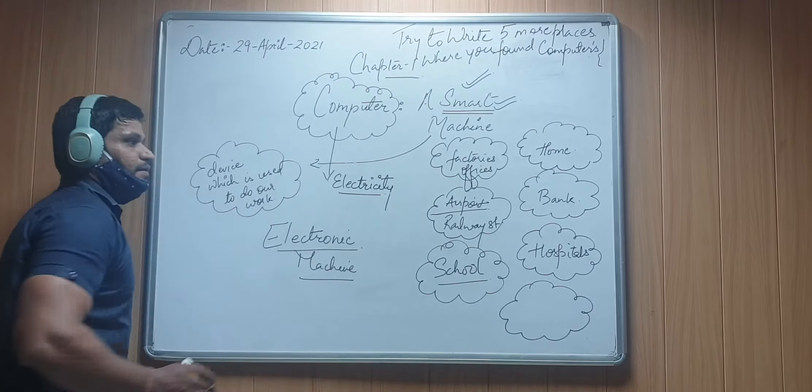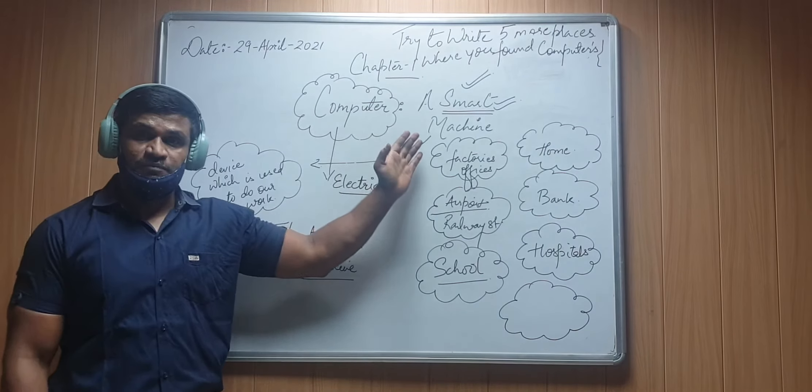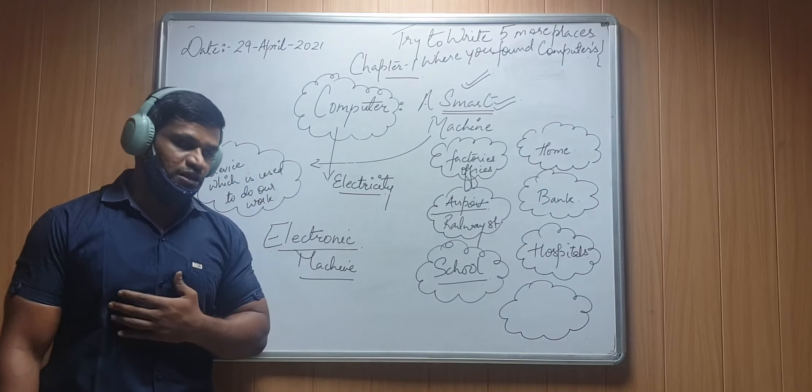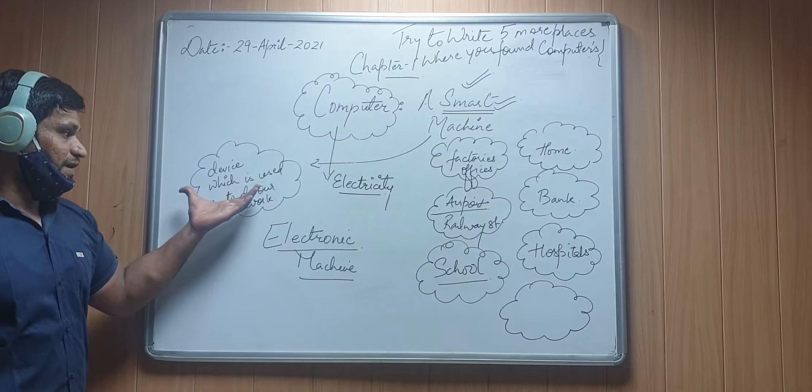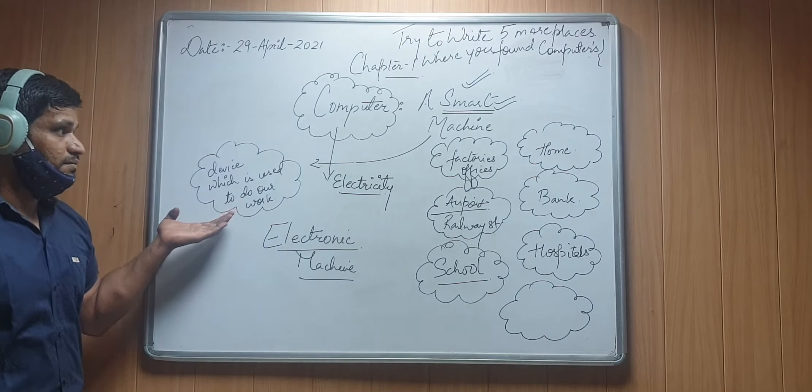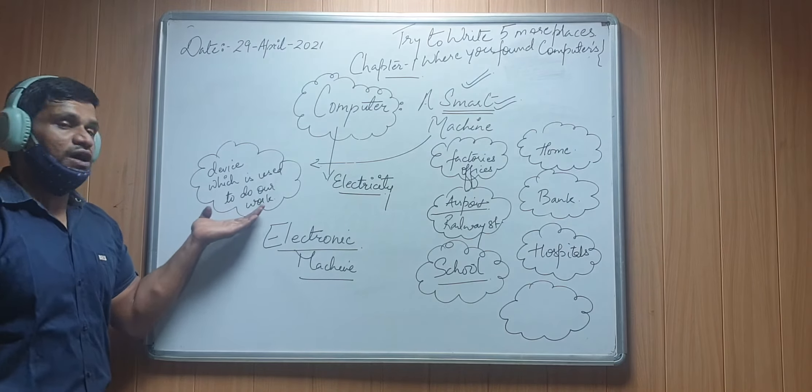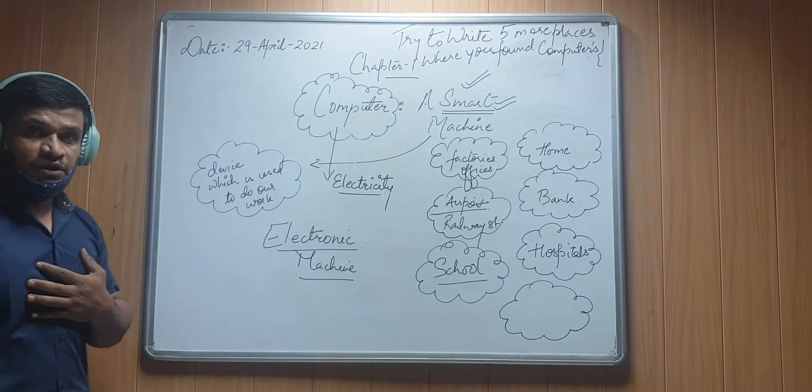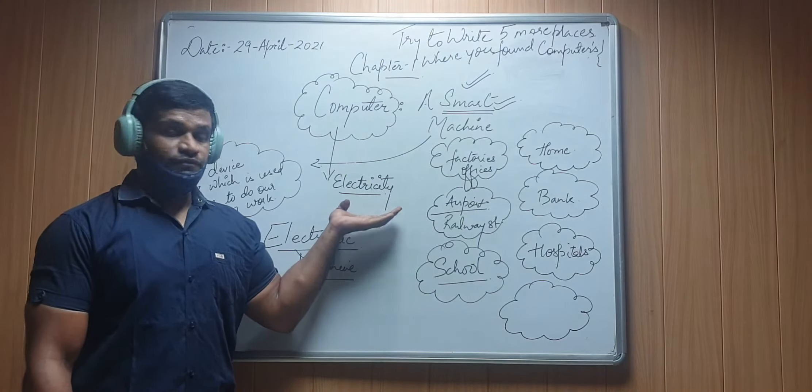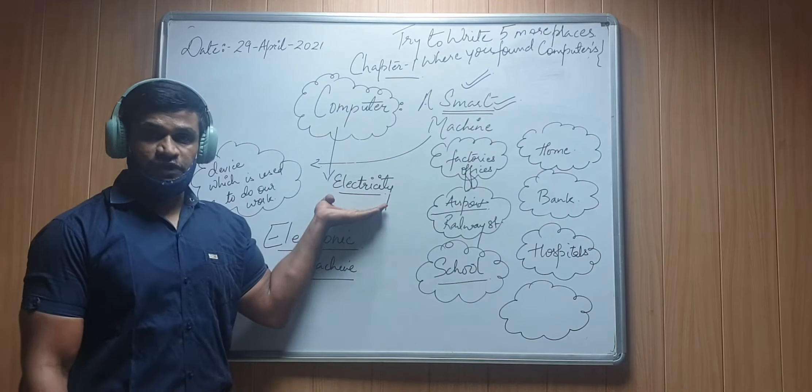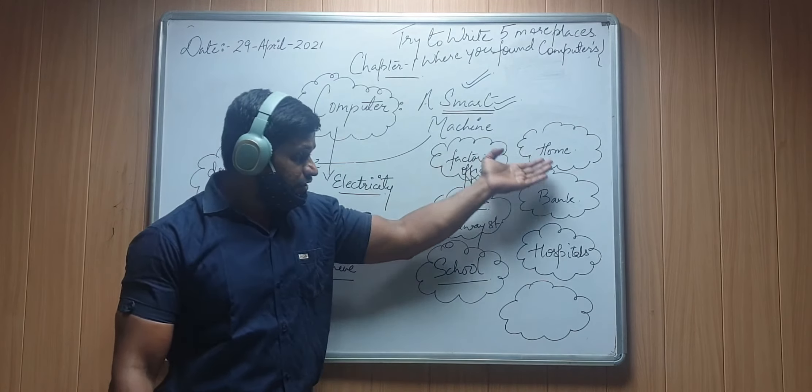So here it is the introduction to the computer. What is computer? Computer is a machine. Why it is a machine? Because we use computer to perform our work. Similarly, it is a device - this is the definition of machine: a device which is used to do our work. So we perform work over computer, hence it's a machine. It's an electronic machine because it runs on electricity. It requires electricity power, without it it will not function. So runs on electricity, hence it is known as electronic machine. And these are the different places where people use computer for doing different work.